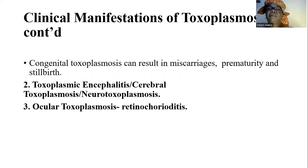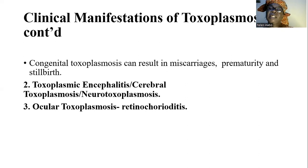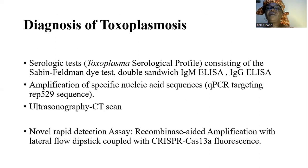Apart from congenital toxoplasmosis, you also have cerebral toxoplasmosis, or neurotoxoplasmosis, or toxoplasmic encephalitis, which can occur in immunocompromised individuals such as HIV patients and organ transplant recipients. If not treated early, it can result in death of the infected person. Third, you have ocular toxoplasmosis.